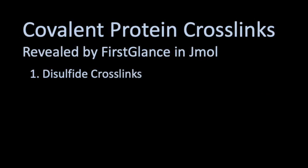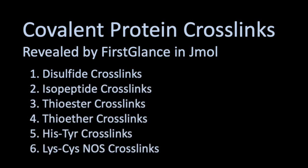Probably most of you are familiar with disulfide bonds as crosslinks between linear protein chains. In addition to disulfide bonds, FirstGlance will alert you to the presence of five other kinds of covalent protein crosslinks.